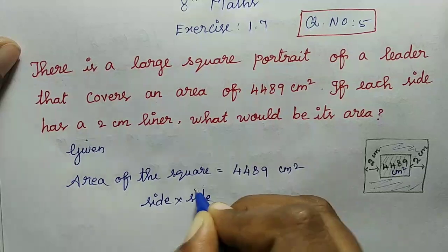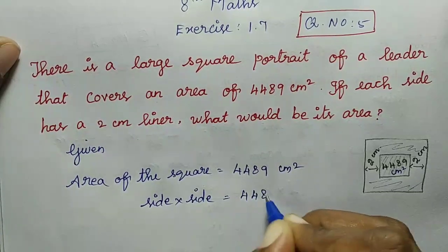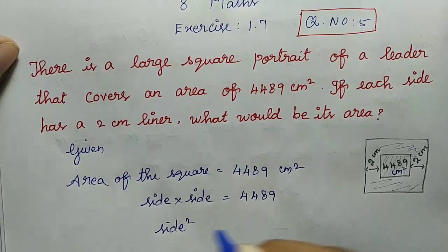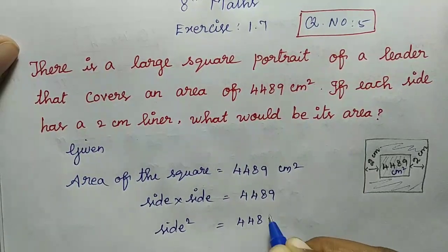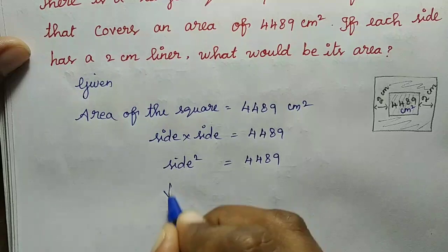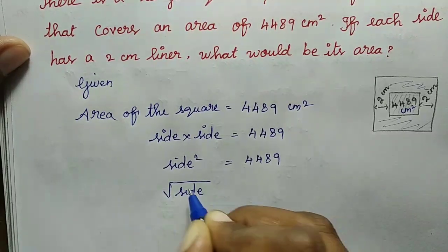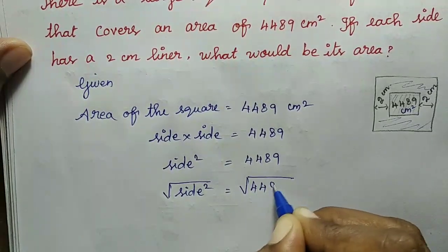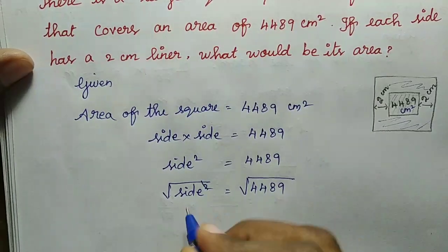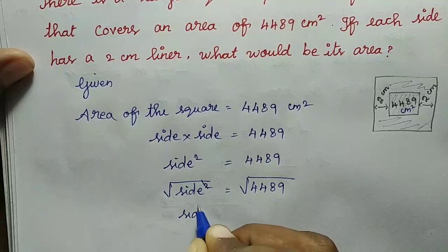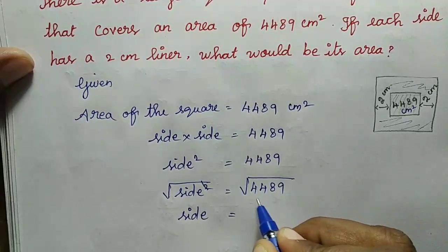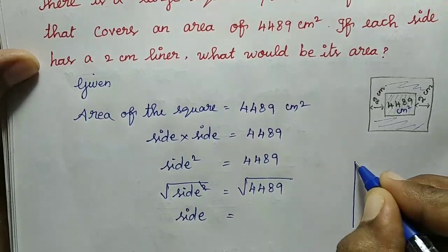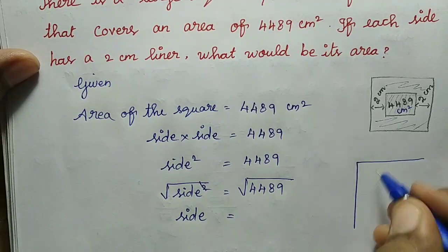Side into side equals 4489. Side square. So we take square root. Square root of side squared equals side. So we find the square root of 4489. We pair the digits and find the square root value.